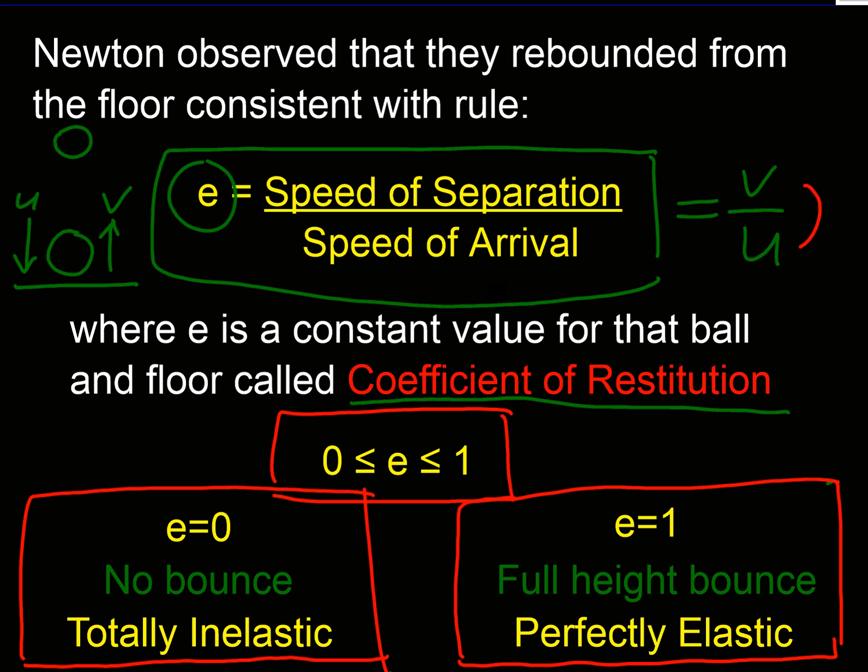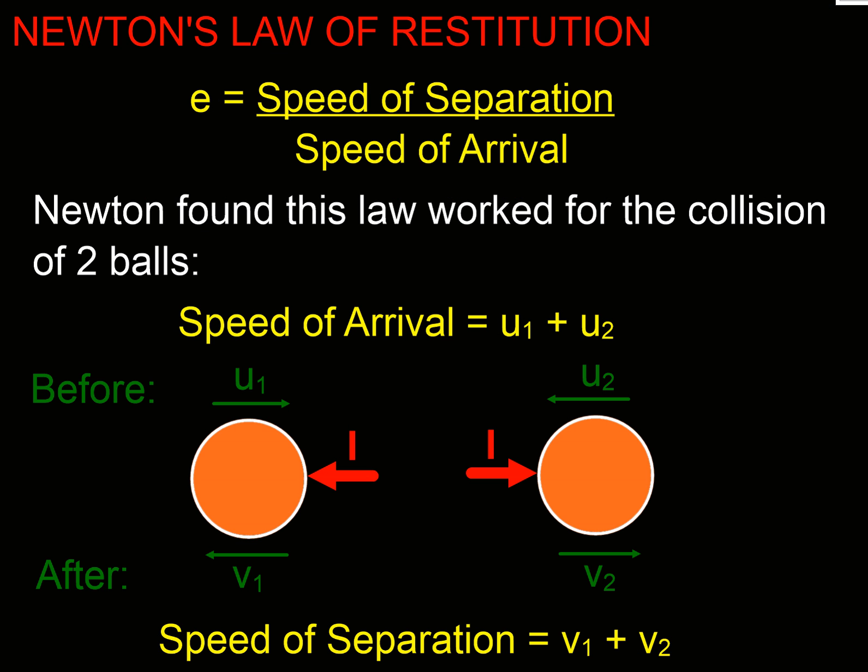Well, that was for a ball hitting a floor. What happens if we have two balls or two objects both moving, able to move, and colliding with each other? Well, this law still applies. We just need to understand what we mean by speed of separation and speed of arrival.